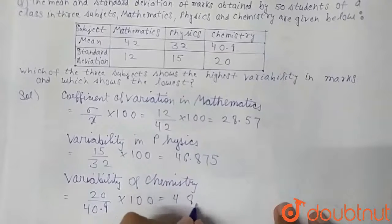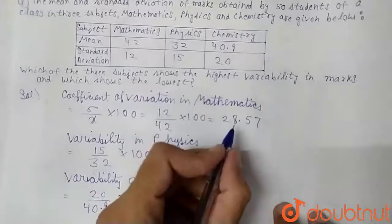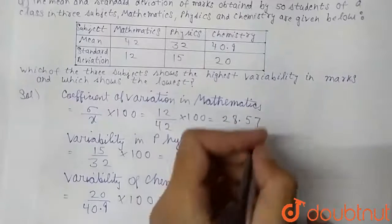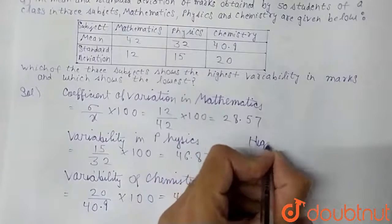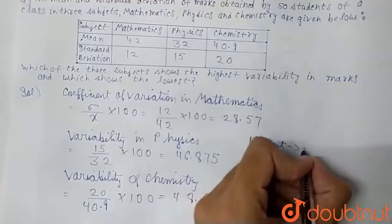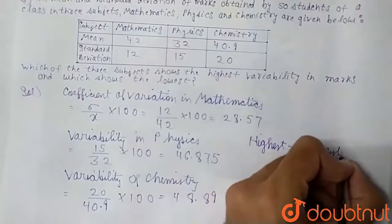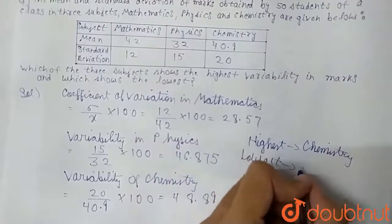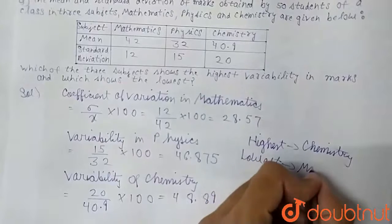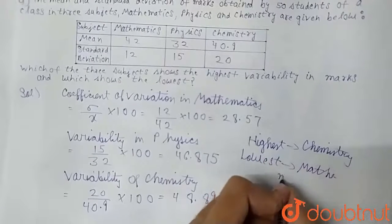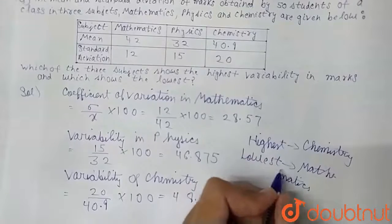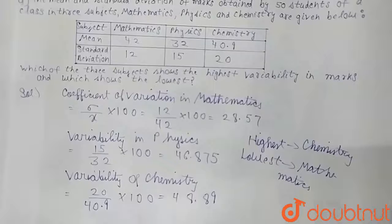We can say that the highest variability is 48.89, which is in chemistry — so chemistry has the highest variability. The lowest variability is 28.57, which is in mathematics — so mathematics has the lowest variability. This is the required answer.